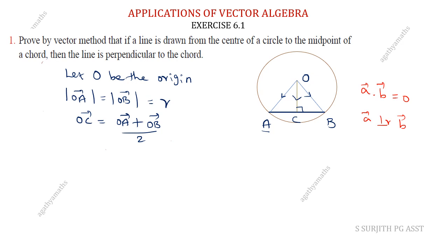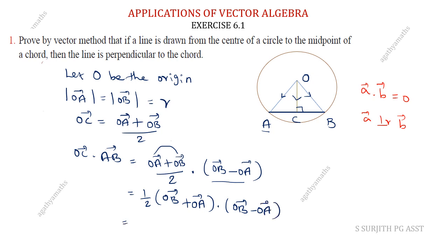That is, OC vector dot AB vector. OC vector equals OA vector plus OB vector by 2, which is the midpoint of AB, dot AB vector, which is OB vector minus OA vector. Using the formula A plus B into A minus B equals A square minus B square.